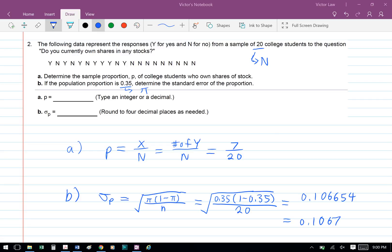Part B. If the population proportion is 0.35, determine the standard error of the proportion.